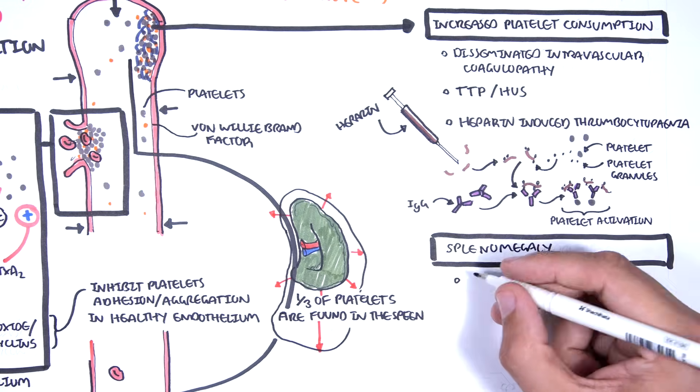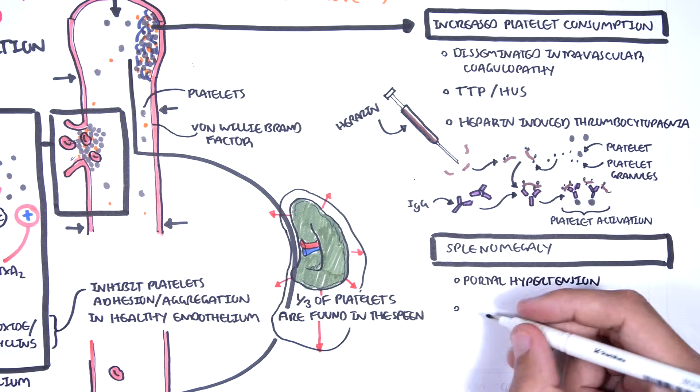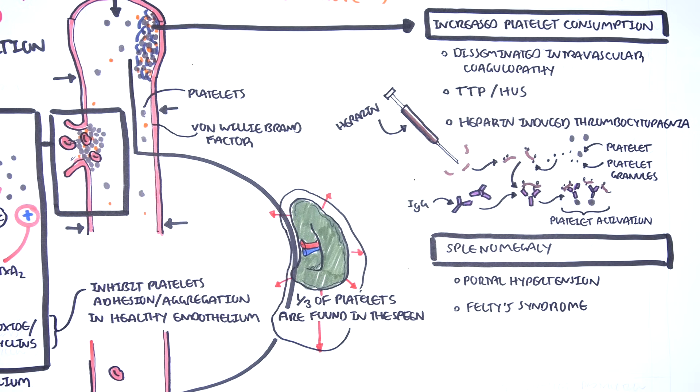Causes of splenomegaly include portal hypertension, secondary to liver disease, and Felty's syndrome, such as seen in rheumatoid arthritis.